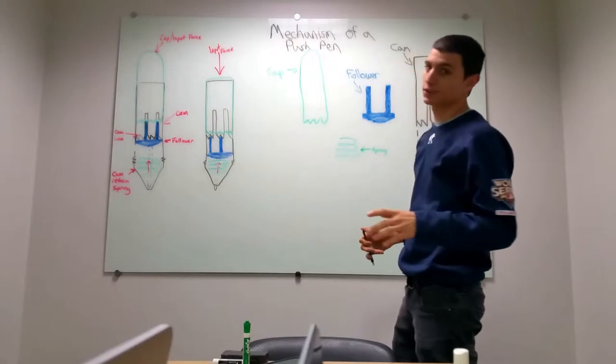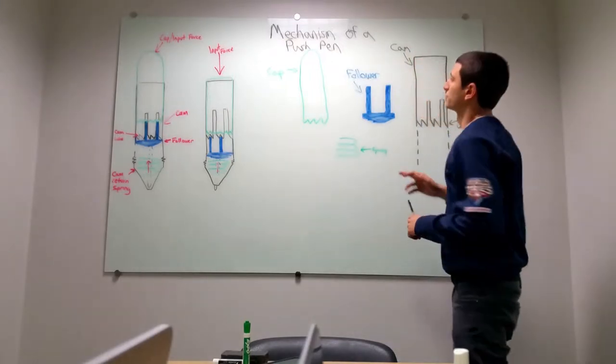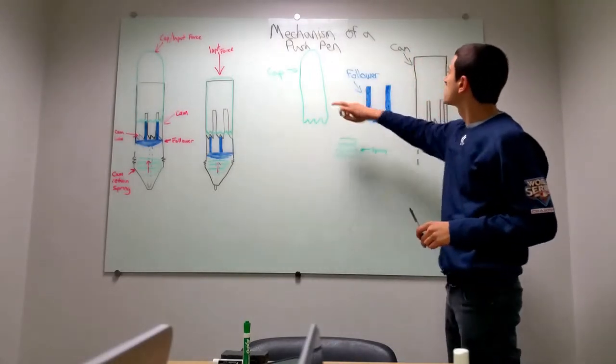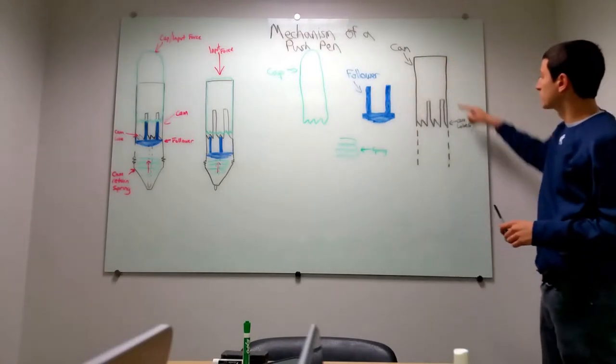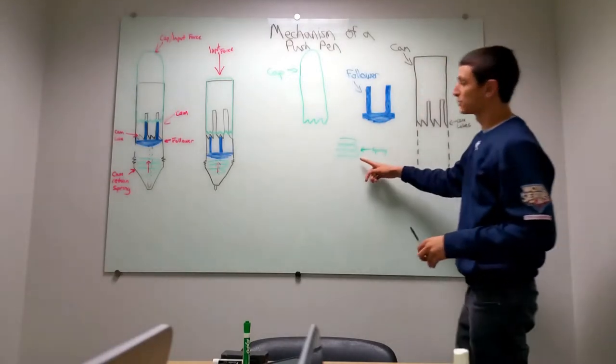There are a couple of integral parts of a push pen mechanism. We have the cap, the follower, the cam and the cam lobes, as well as the springs.